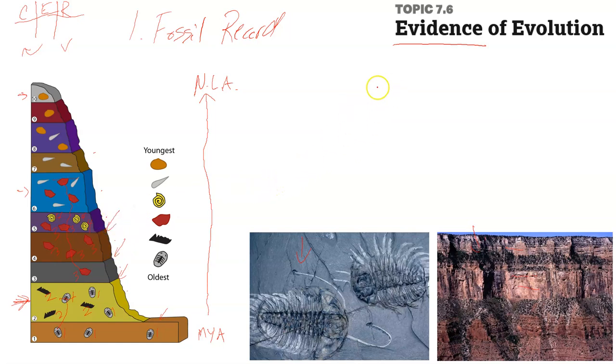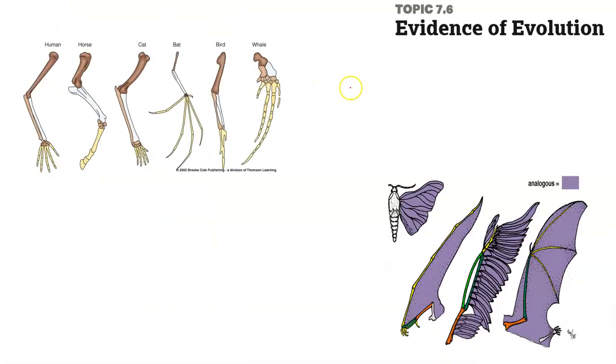That is one piece of evidence for evolution. One of the pieces of evidence that you can really see quite clearly is homologous structures, homology of anatomy.